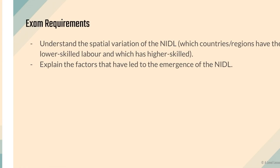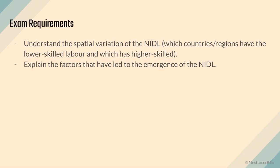That's all for NIDL. Exam requirements are straightforward — you need to understand the spatial variation of NIDL: which countries or regions have lower-skilled labor and which have higher-skilled labor, as well as explain the factors that led to the emergence of NIDL. This topic serves as a preamble to understanding the entire GPN — it is one part of the GPN, and we'll look at the rest in upcoming videos. This topic can come out in essay questions, so study the different factors and include relevant examples where applicable.